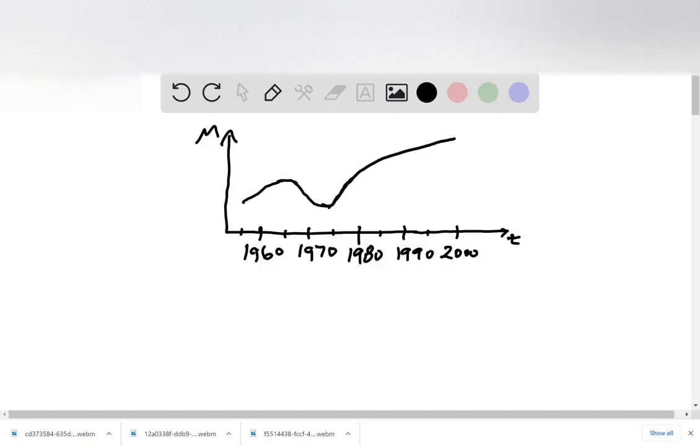So in this problem, we're given a graph of the average age of first marriage of Japanese men from 1960 to 2000, and we're asked to sketch the graph of the derivative function m prime of t, and which years was the derivative negative?